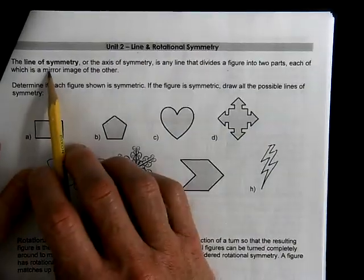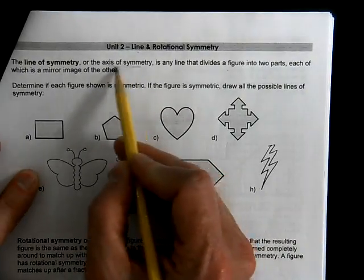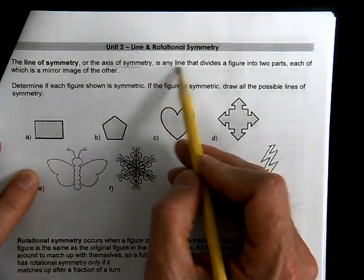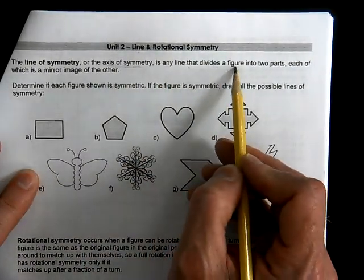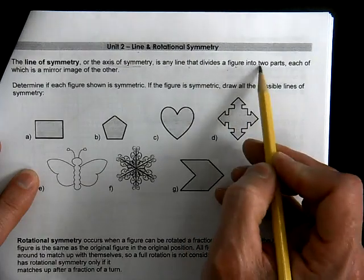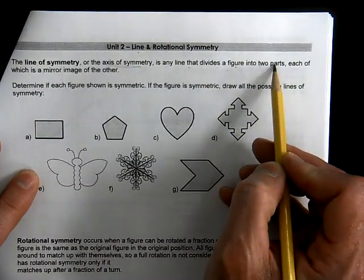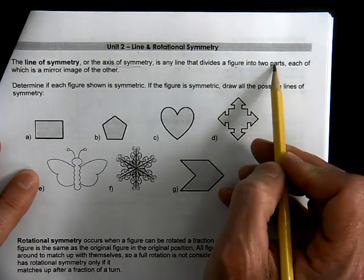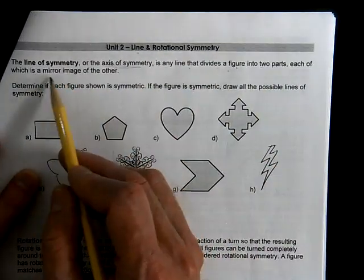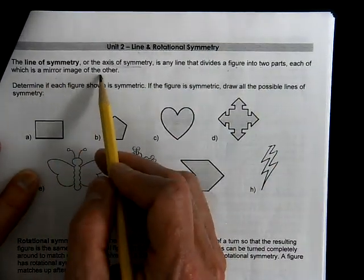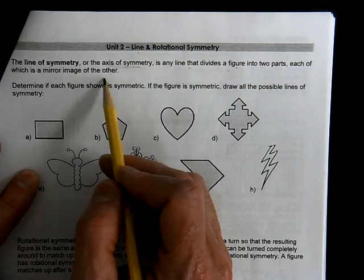Line symmetry, otherwise known as axis of symmetry, is any line that divides a figure into two or more parts. Each part has a mirror image of the other.